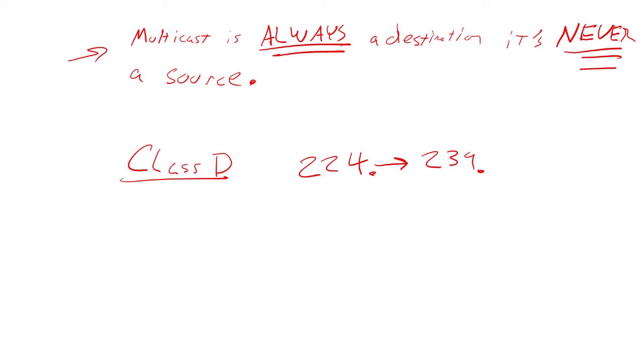That's how it's supposed to work. But who's to say that I couldn't come along with a packet crafting utility like HPing or Scappy and come in here to the source address and say 225.5.5.5. I could absolutely do that. And I can put the destination as your firewall. And that's exactly what I did.